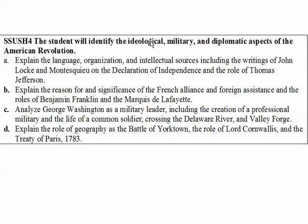This first one — ideological aspects of the American Revolution — is going to be the longest. Section A says: explain the language, organization, and intellectual sources, including the writings of John Locke and Montesquieu, on the Declaration of Independence and the role of Thomas Jefferson. We have to break that down. We'll cover the intellectual sources when I do the ideological aspects of the American Revolution, and then we're going to look at John Locke and Thomas Jefferson.